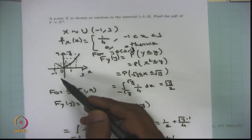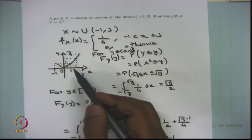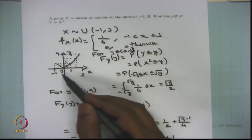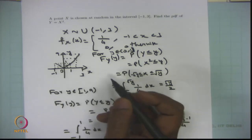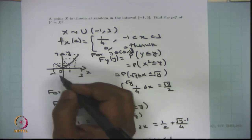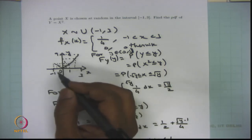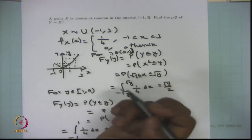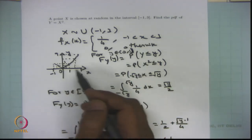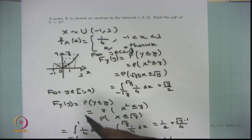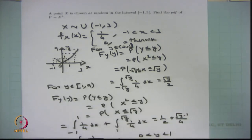Suppose the problem had been a point x chosen at random in [-1, 1]. In that case, for y in [0, 1] you would have two inverse images and you could apply the theorem from one-dimensional random variables. If the point were chosen from [1, 3], there would be only one inverse image throughout. Here, because the interval is [-1, 3], in some portions there are two inverse images and in some portions only one. Therefore, we partition the interval piece by piece, find the CDF separately, and combine everything.